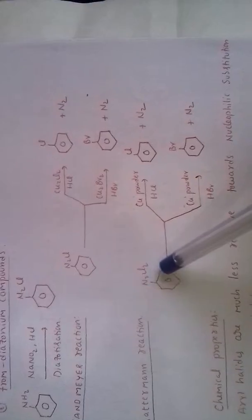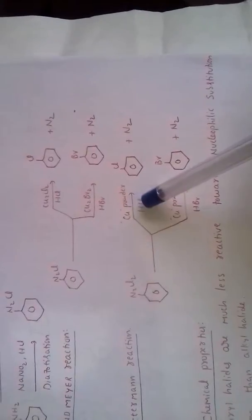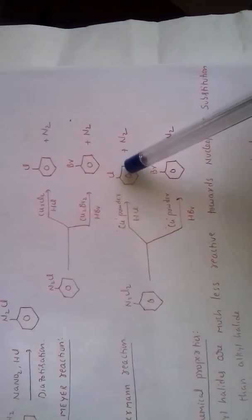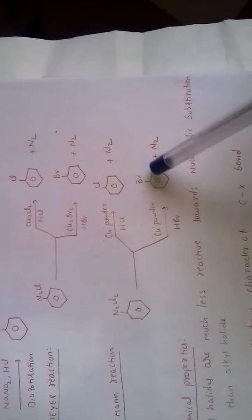In Sandmeyer reaction, cuprous chloride and cuprous bromide are the catalysts. In Gutterman reaction, which is similar, benzene diazonium chloride reacts with HCl in presence of copper powder to form chlorobenzene. HBr in presence of copper powder forms bromobenzene.